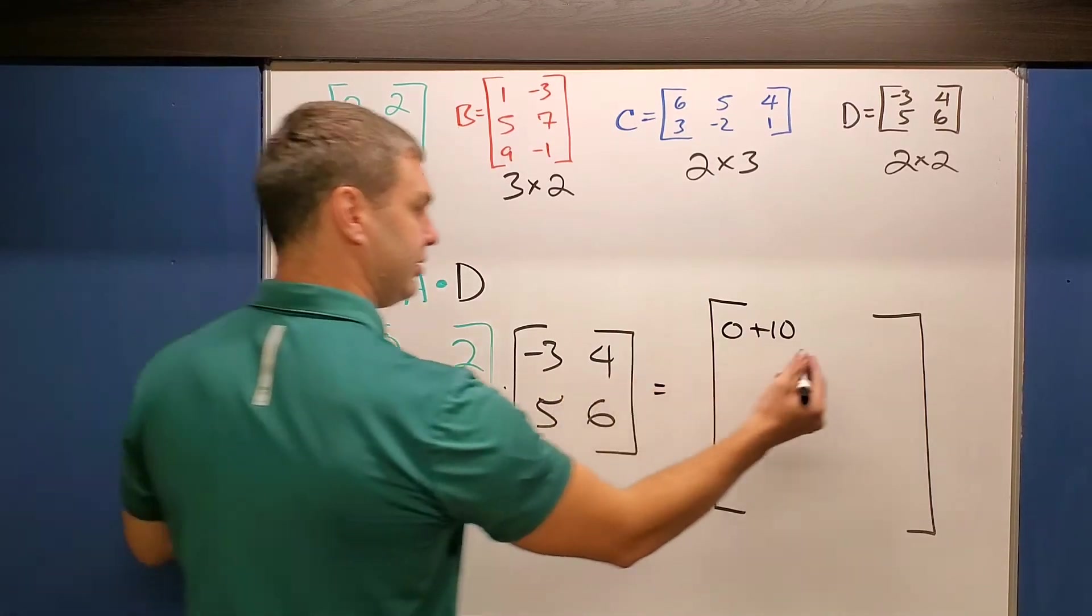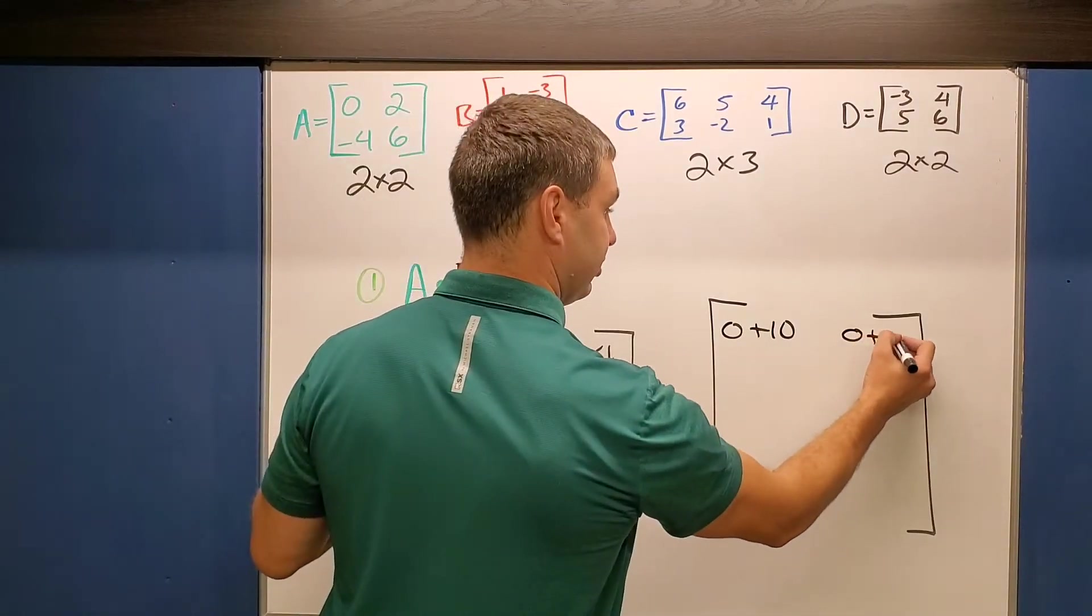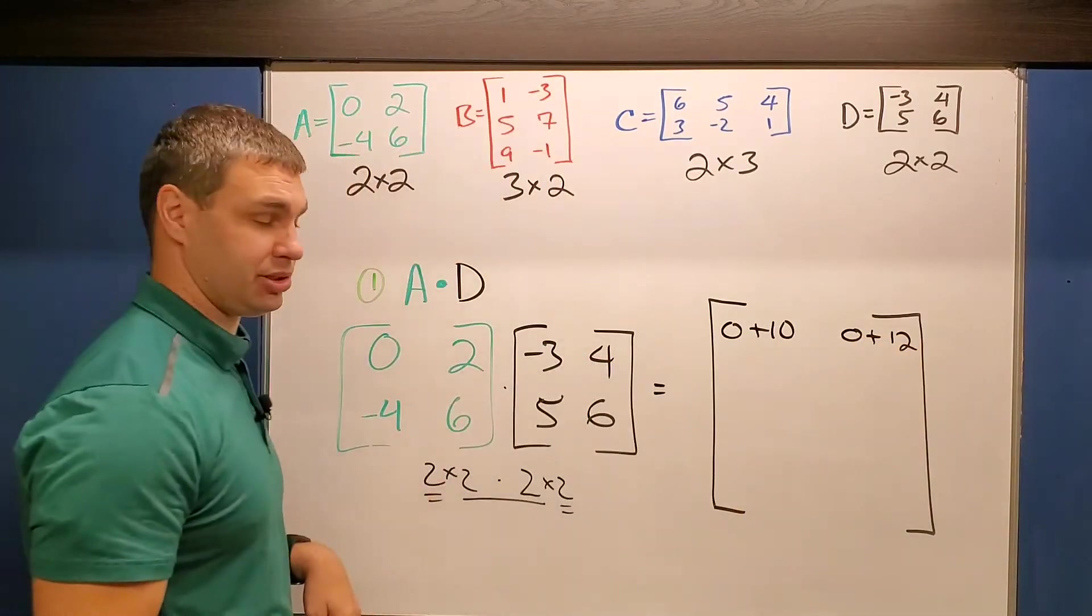So again, 0 times 4 is 0 and 2 times 6 is 12. And you're going to add those together. So 0 plus 12.